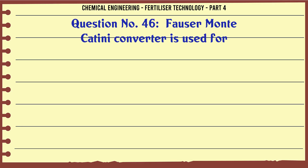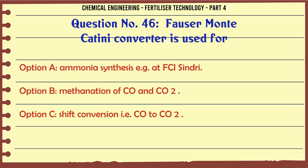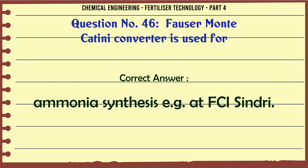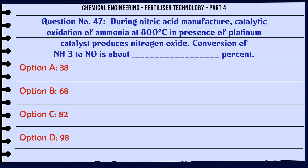Phospha-Monte-Catini converter is used for: a. ammonia synthesis (e.g. at FCI Sindri), b. methanation of CO and CO2, c. shift conversion (i.e. CO to CO2), d. none of these. The correct answer is: ammonia synthesis e.g. at FCI Sindri.